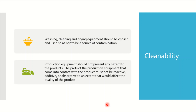The next topic is cleanability. Washing, cleaning, and drying equipment should be chosen and used so as not to be a source of contamination. Again, we talk about design where the machine should be cleanable — personnel should be able to access the areas that need to be cleaned manually, or if it is an automatic process, the system should allow complete cleaning and readiness for the next process. If we are not able to access and clean a system, it will always increase the chance of contamination.